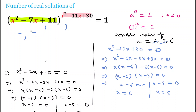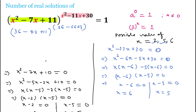Checking x = 6: the base is 36 - 42 + 11 = 5, which is not equal to 1. But the exponent is 36 - 66 + 30 = 0. So anything raised to the power 0 equals 1, meaning x = 6 also satisfies the equation. So the real solutions are x = 2, 5, 6, and the number of real solutions is 3.